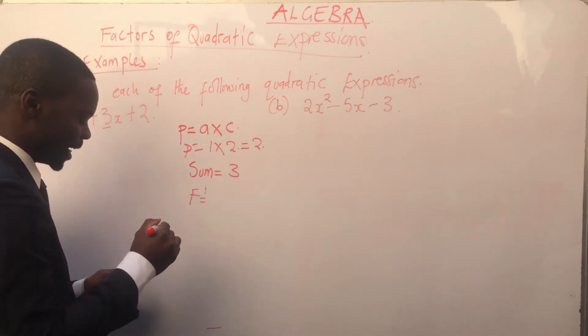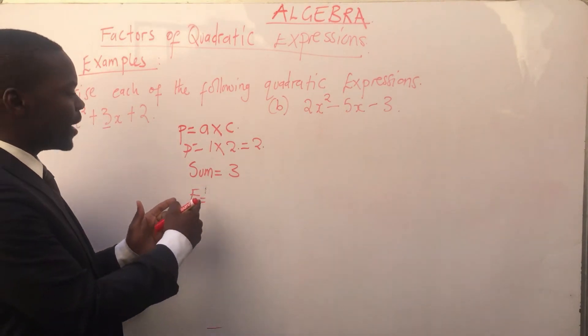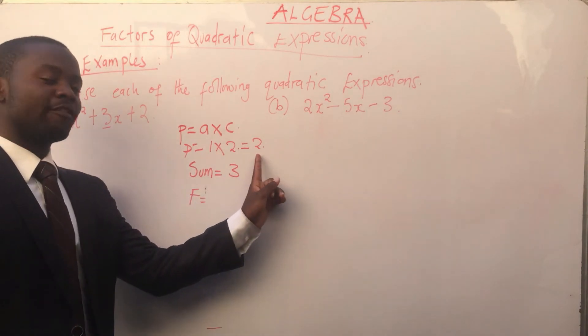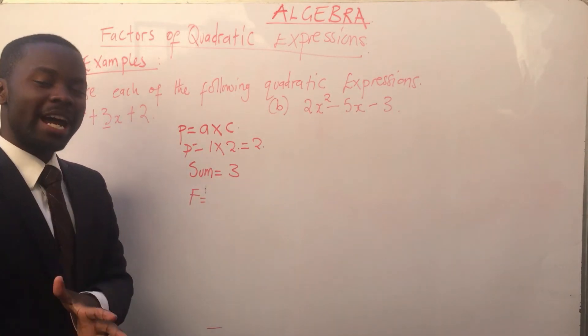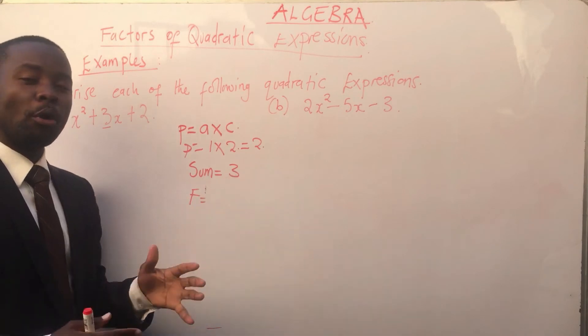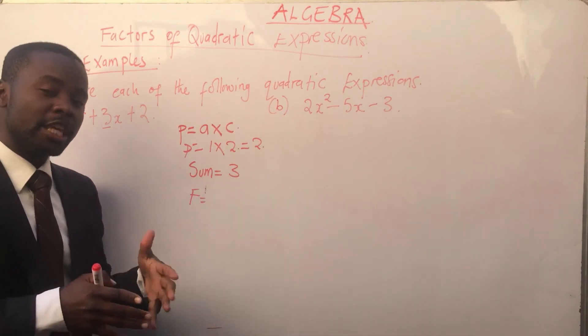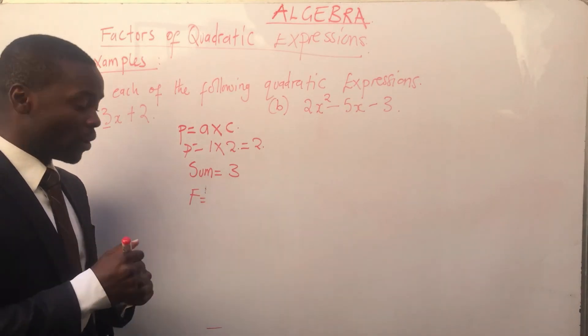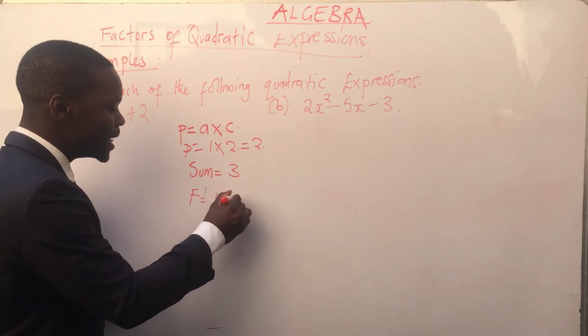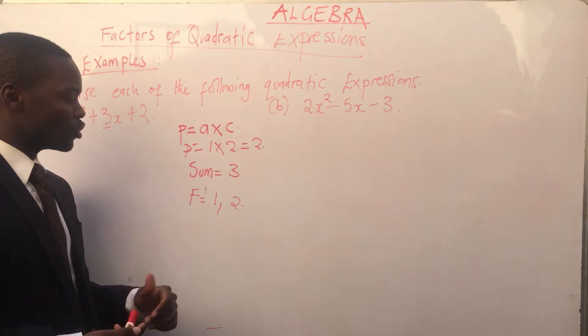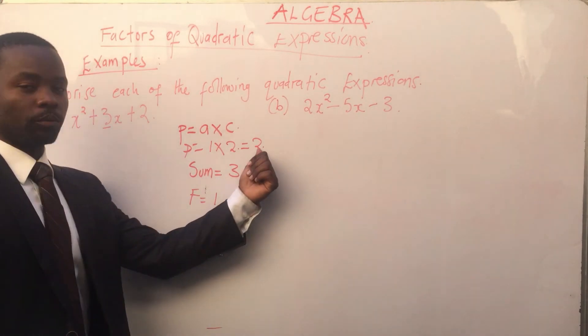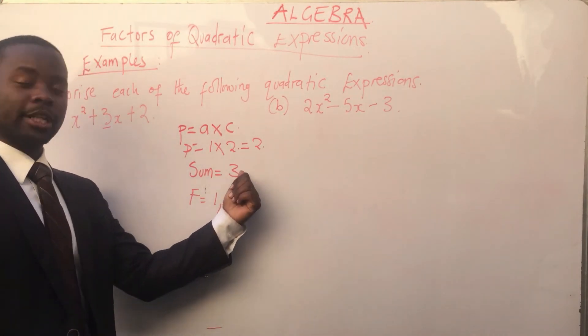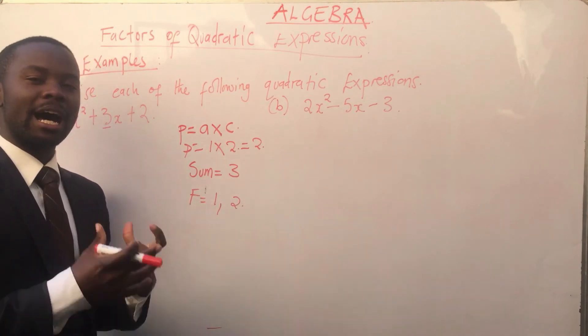Then we look for the factors. We look for the factors of 2. The factors of 2, when you multiply them, must give us 2. When you add or subtract, they should give you 3. So those 2 factors are 1 and 2. Let's try them. 1 times 2 is 2. 1 plus 2 is 3. So these 2 factors have qualified.